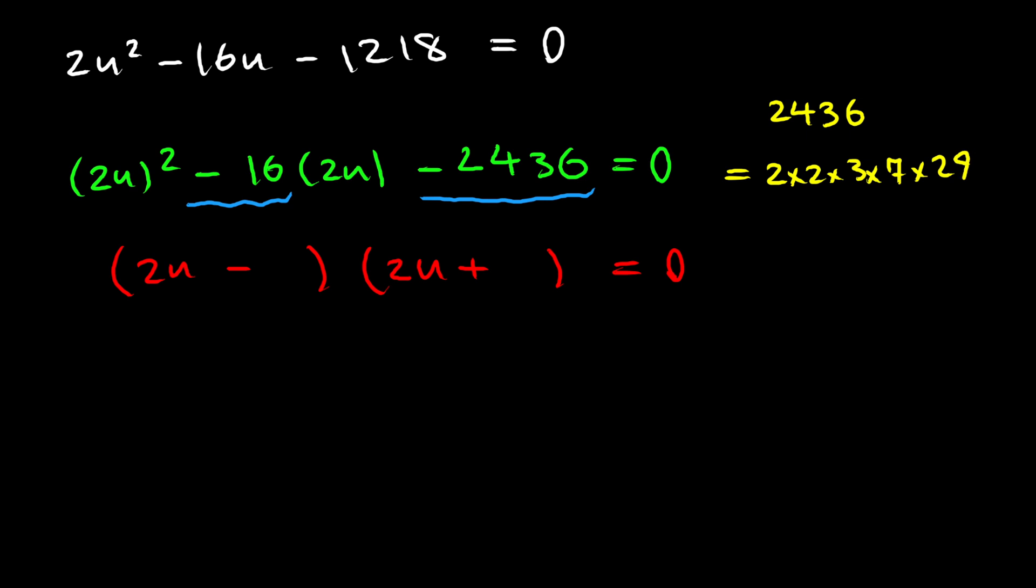So we want to find two numbers that add up to negative 16 and multiply to negative 2,436. Notice that 2,436 can be factored as 2 times 2 times 3 times 7 times 29. Now, if we check and guess a little bit, we will find out that this is 42 and this is going to be 58. And the difference of 58 and 42 is 16. So these two numbers are going to be the numbers we want. And since we have negative 16, 58 is going to be the negative one and 42 is going to be the positive one. Now, we can solve for u and we will have u equals 29 or u equals negative 21.